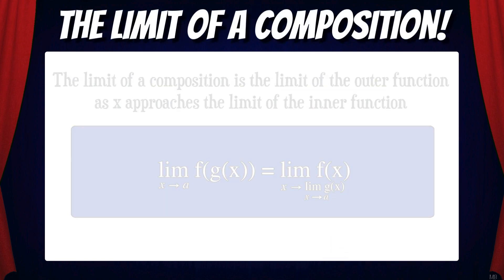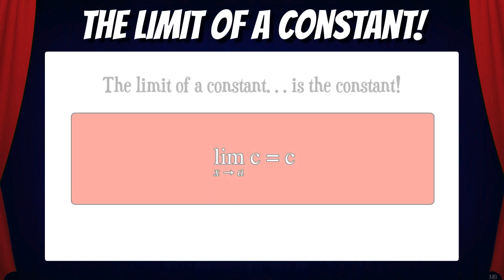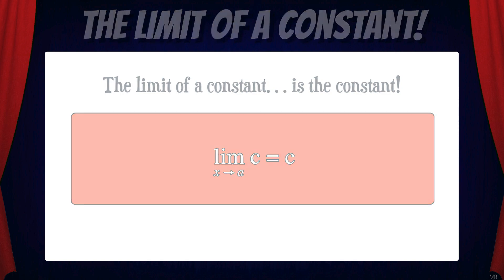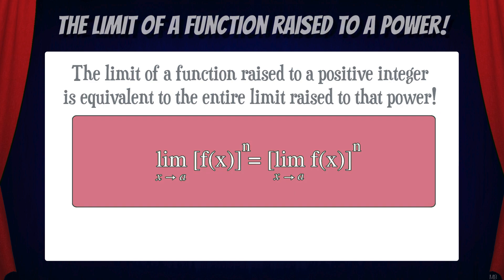Now here's a curious one: the limit of a composition. The limit of a composition is the limit of the outer function as x approaches the limit of the inner function. We'll look at an example of this in a second. We also have the limit of a constant — the limit of a constant as x approaches a is just the constant itself. And there's one more limit law: the limit of a function raised to a positive integer is equivalent to the entire limit raised to that power.